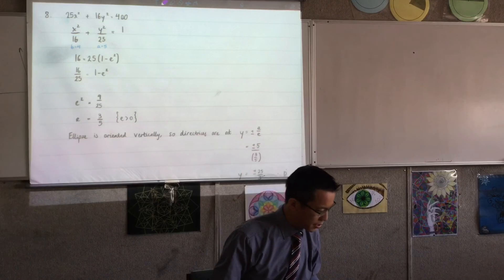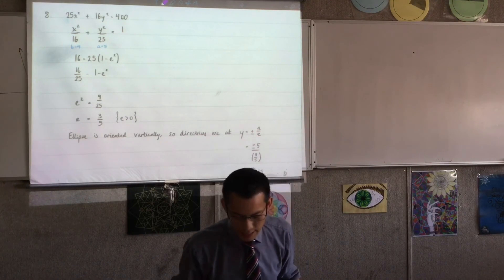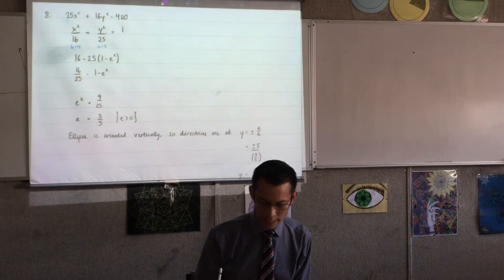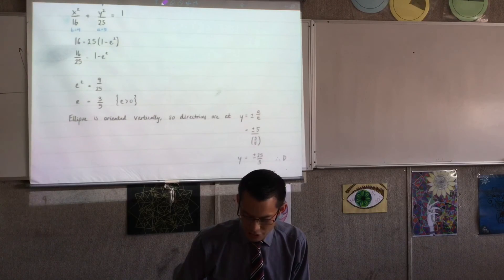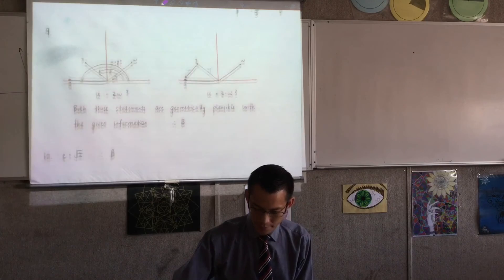Question eight. Won't dwell on that one too much. You really did need to know to get that in the right form. Make the right-hand side equal one. You can see my working there. Crunch out your a and your b values and go ahead and you can work out what the equations of the directrices are.